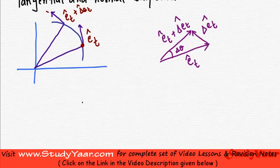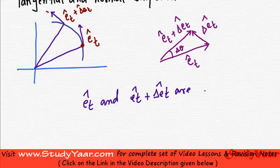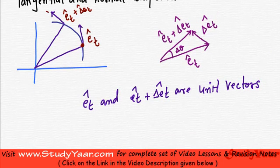I am just going to write over here. ET and ET plus delta ET are unit vectors. Therefore, what is the length or magnitude of delta ET? Let us see.